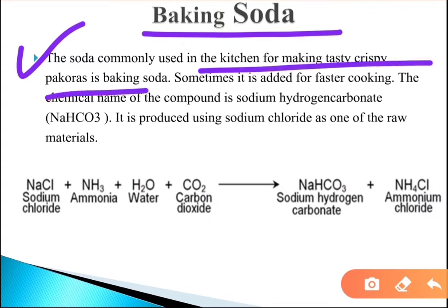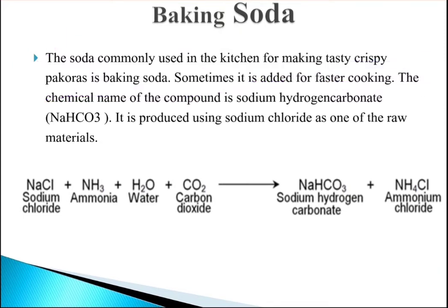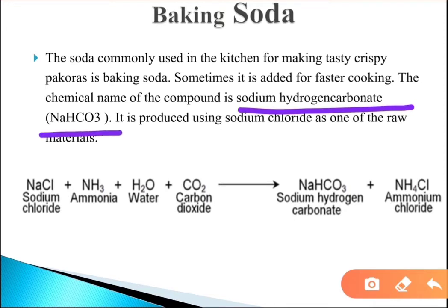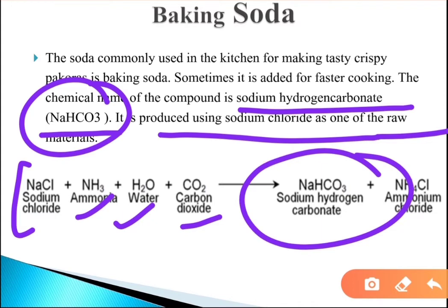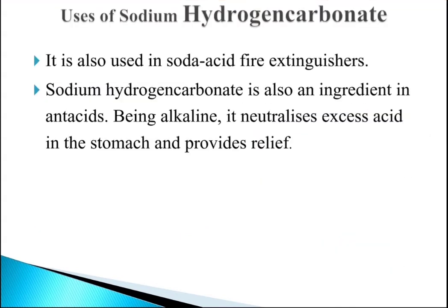Baking soda is the soda commonly used in the kitchen for making crispy pakoras, and is sometimes added for faster cooking. Its chemical name is sodium hydrogen carbonate with the formula NaHCO3. It is prepared using sodium chloride as a raw material — NaCl reacts with ammonia, water, and carbon dioxide to form NaHCO3 and ammonium chloride (NH4Cl) as a byproduct.